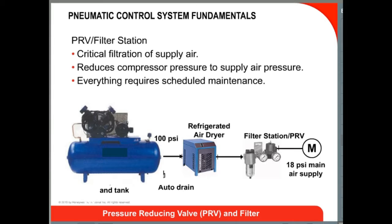The air from the dryer enters the pressure reducing valve, or PRV, station, where several things happen. The air is cleaned by a filter, and the tank pressure is reduced to a usable main air pressure by the pressure reducing valve. The reduced pressure and cooler temperature air reduces the relative humidity, dropping further as the air is delivered throughout the warmer ambient temperatures of the building. Now we have very dry air at a safe working pressure.